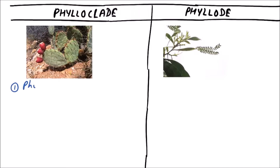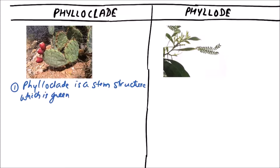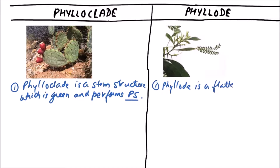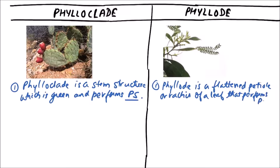A phylloclade is a stem structure which is green and performs photosynthesis, while a phyllode is a flattened petiole or rachis of a leaf that also performs photosynthesis.